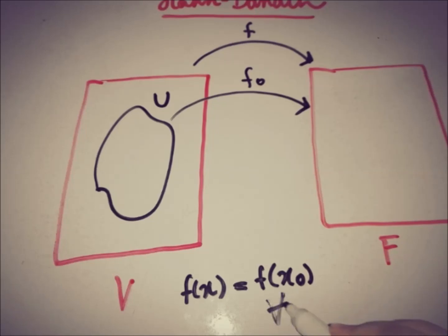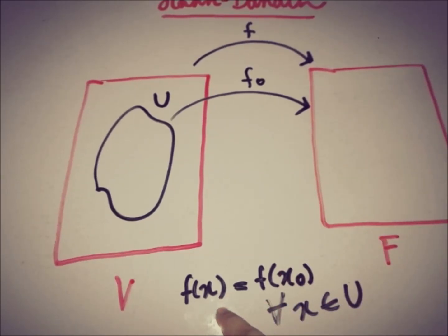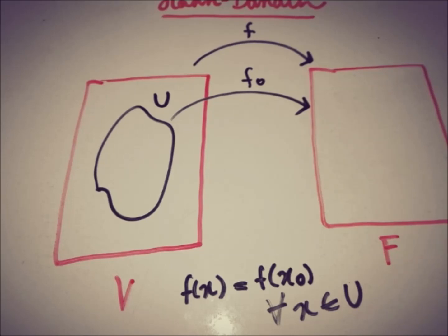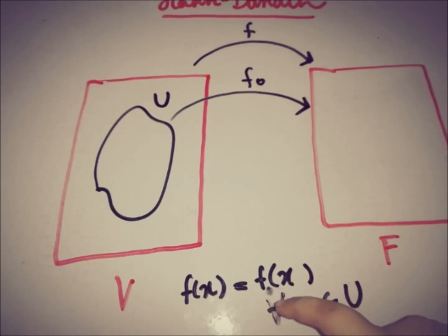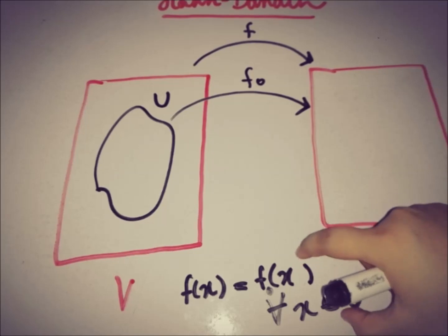This functional F is said to be the extension of the linear functional F₀ if F(x) = F₀(x) for all X in U. So if the images of X under F agree with F₀ for all X in U, then the linear functional F is the extension of F₀.